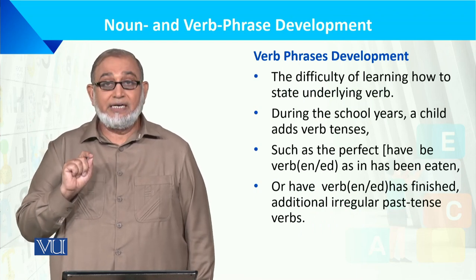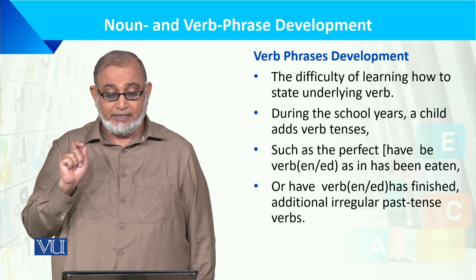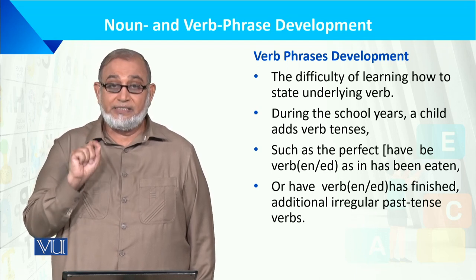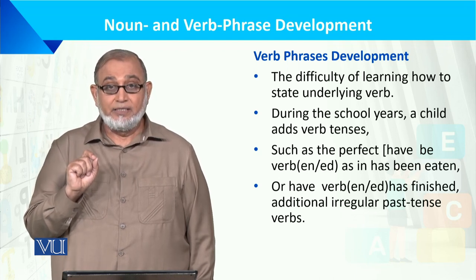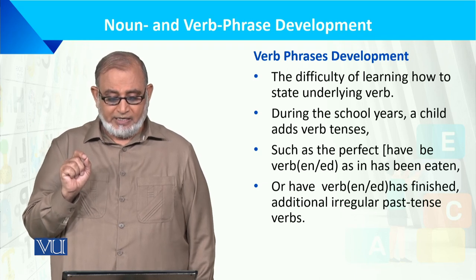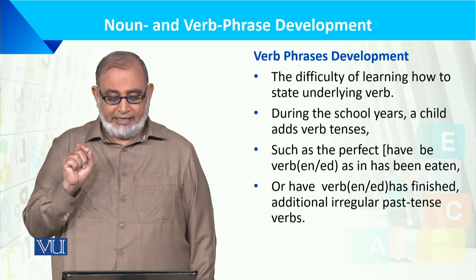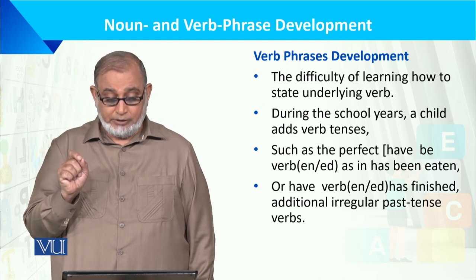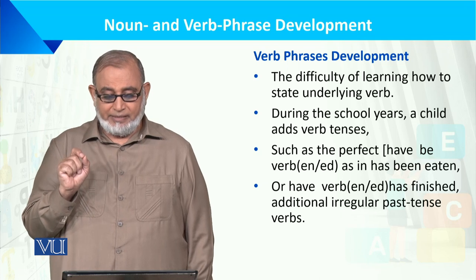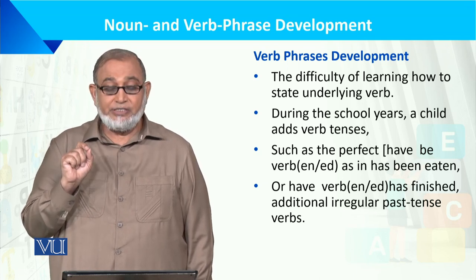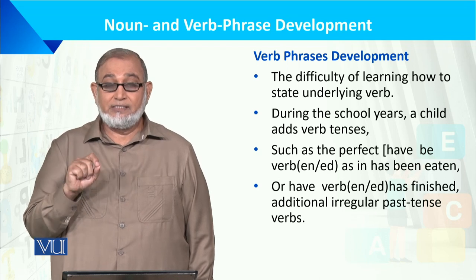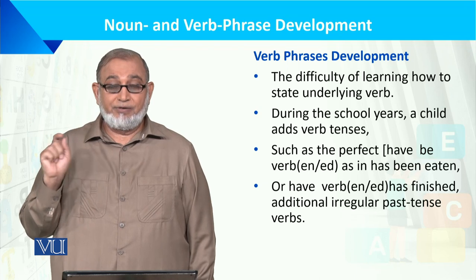In verb phrase development, during the school years a child adds verb tenses, because using tenses is essential for conveying correct meaning. This includes the perfect tenses — for example, 'has been eaten' (present perfect passive) — where 'has been' is used before the third form of the verb. Additionally, children acquire 'have been,' 'has finished,' and additional irregular past tense verbs. Tenses change from present to past, past to present perfect, and so on.